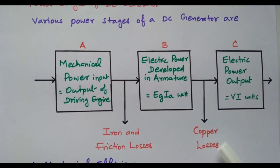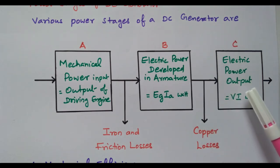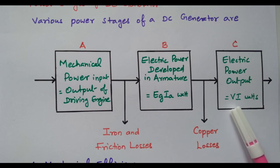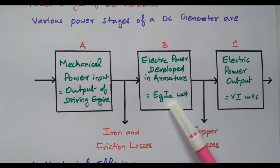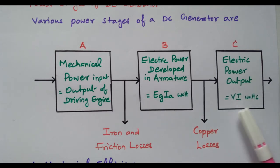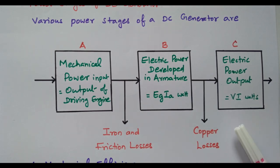The balance is generated in the armature. Again, some losses will happen due to copper — due to the winding. The remaining energy goes to the output of the DC generator, which is V × I: terminal voltage into load current. So this is the generated voltage and current flowing through the armature. While going outside, some copper loss will happen, and the remaining energy will be available at the output — that is the power output, voltage into current.